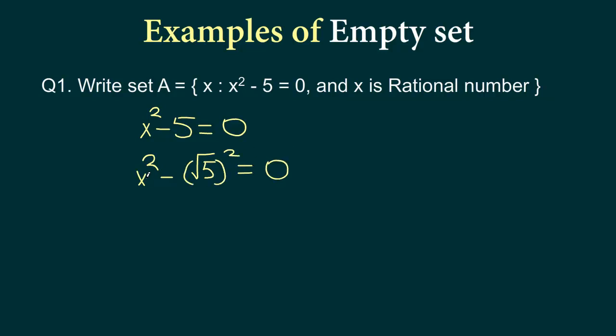Now this is in the form of A square minus B square, so we can write this as x plus square root 5 times x minus square root 5 equals 0, and this will imply we have two solutions: x equals plus square root 5 and x equals minus square root 5.